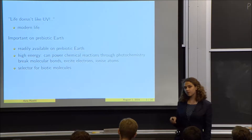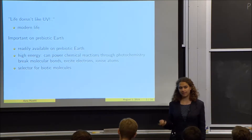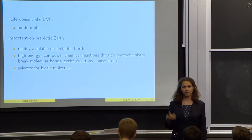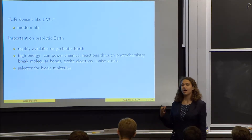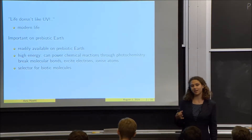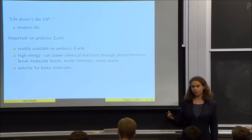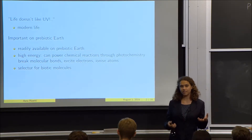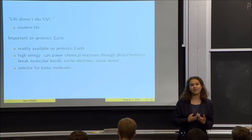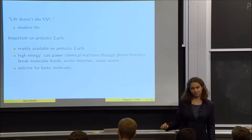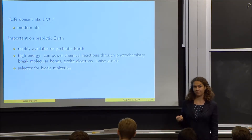We have very strong experimental evidence that the nucleobases life uses today, like ribouridine and ribocitidine, have their concentration amplified under UV light. This makes it more probable — because they would have a higher concentration — for them to come together, react, polymerize, and therefore engage in a pathway that would lead to the formation of life.